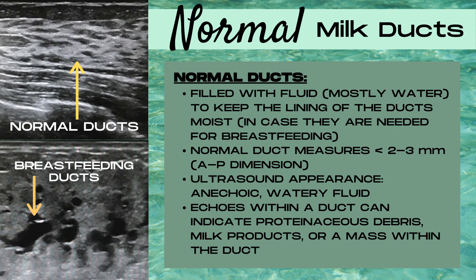Let's discuss the normal appearance of milk ducts on an ultrasound. Normal milk ducts are filled with fluid — mostly a watery substance — to keep the lining of the milk ducts moist in case they're ever needed for breastfeeding. A normal milk duct measures two to three millimeters in AP dimension. The ultrasound appearance of a milk duct is anechoic, watery fluid inside. If there are echoes within a duct, this can indicate proteinaceous debris, milk products, or some sort of ductal pathology.